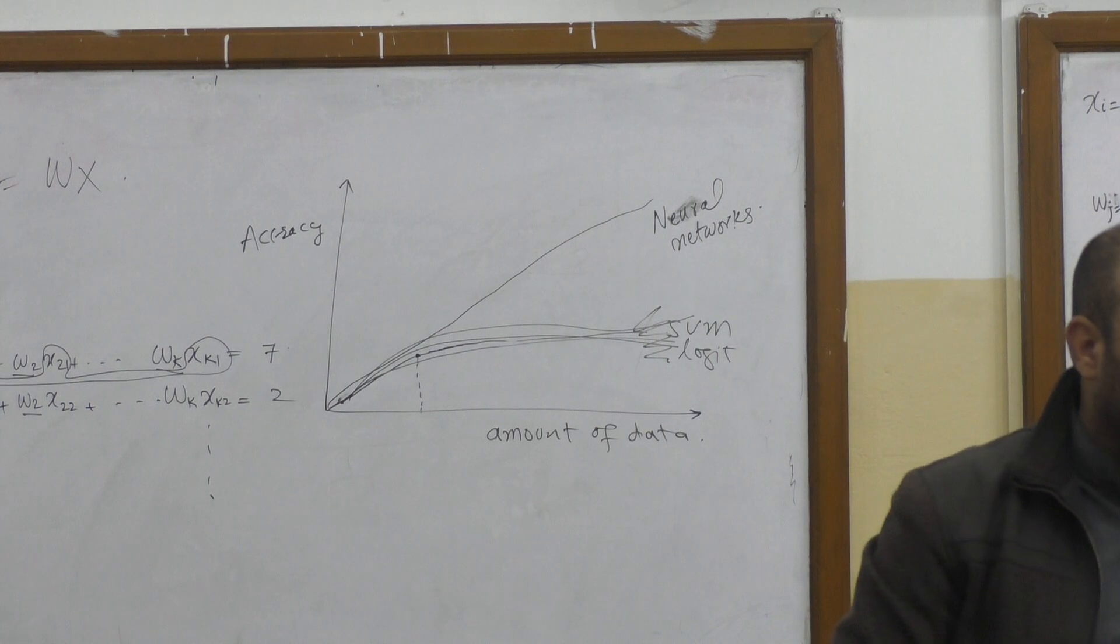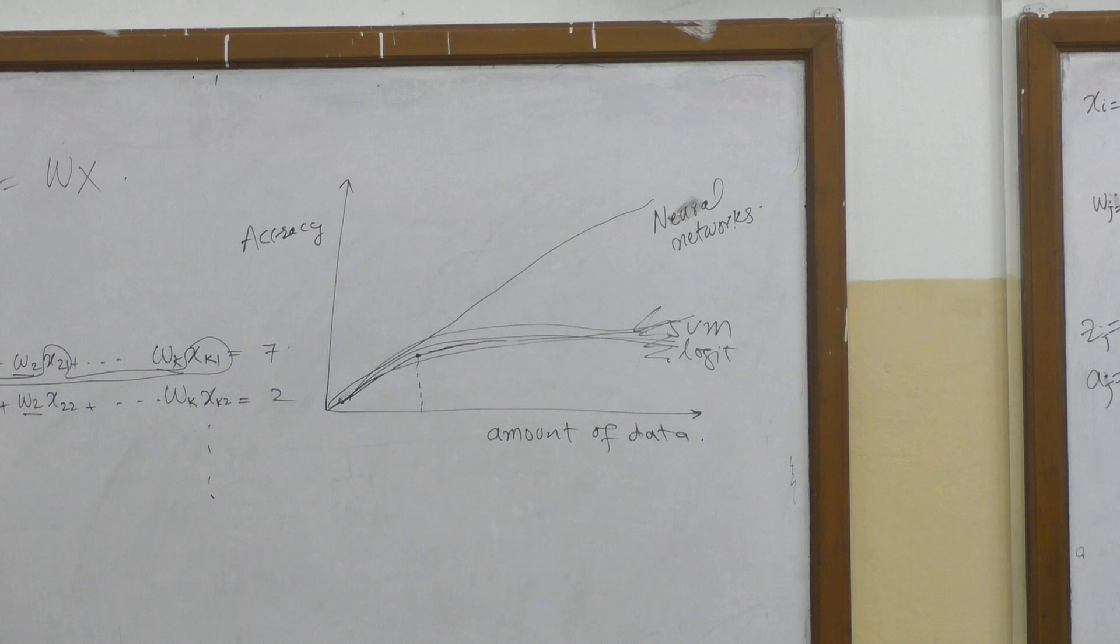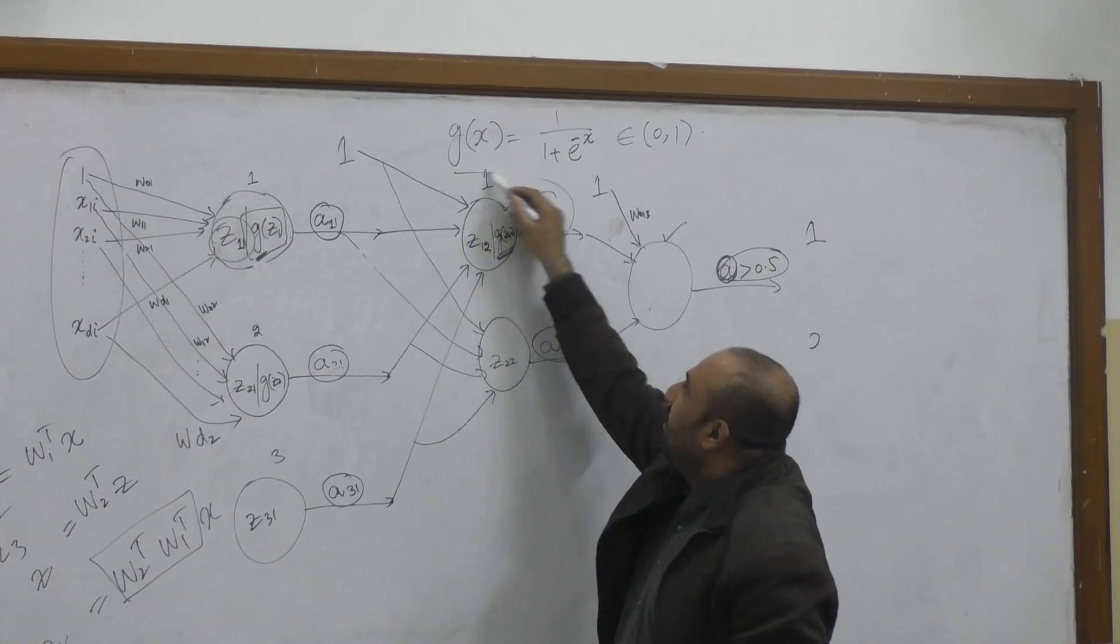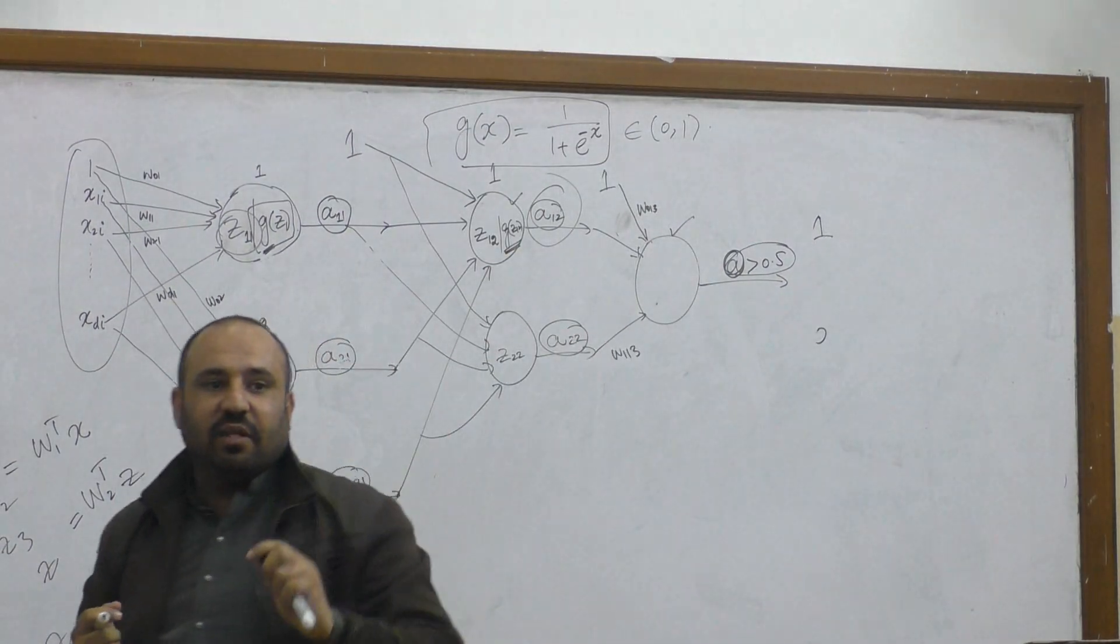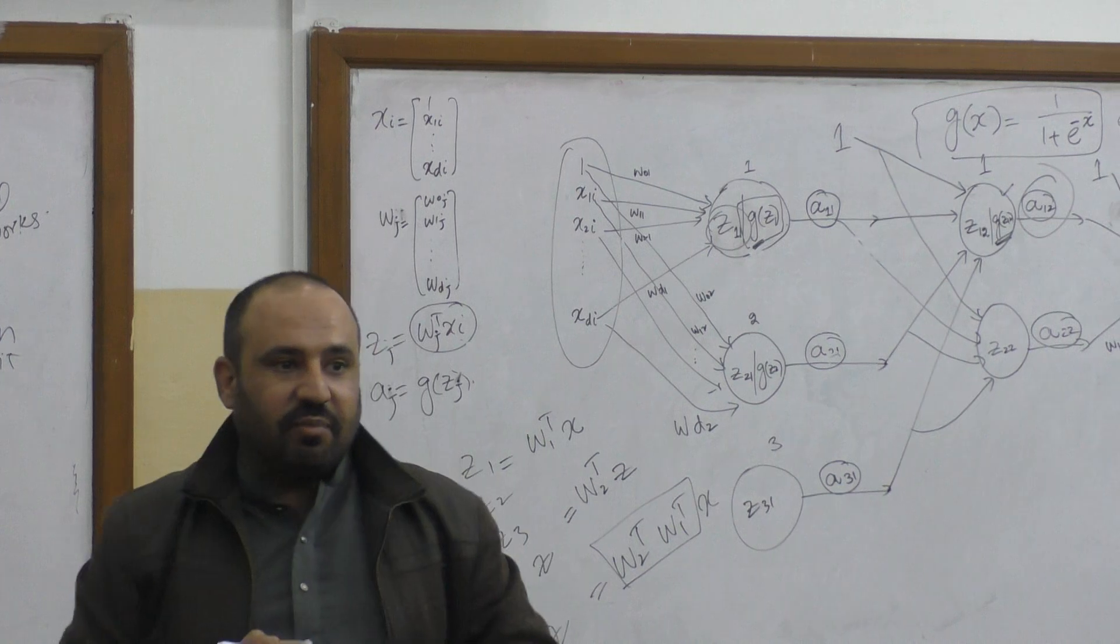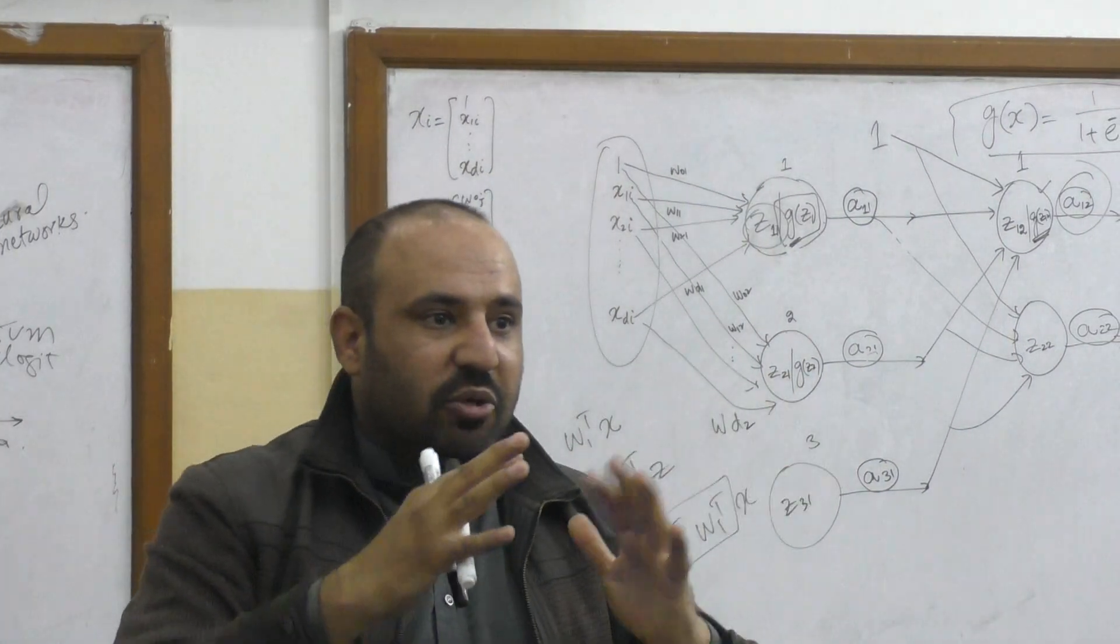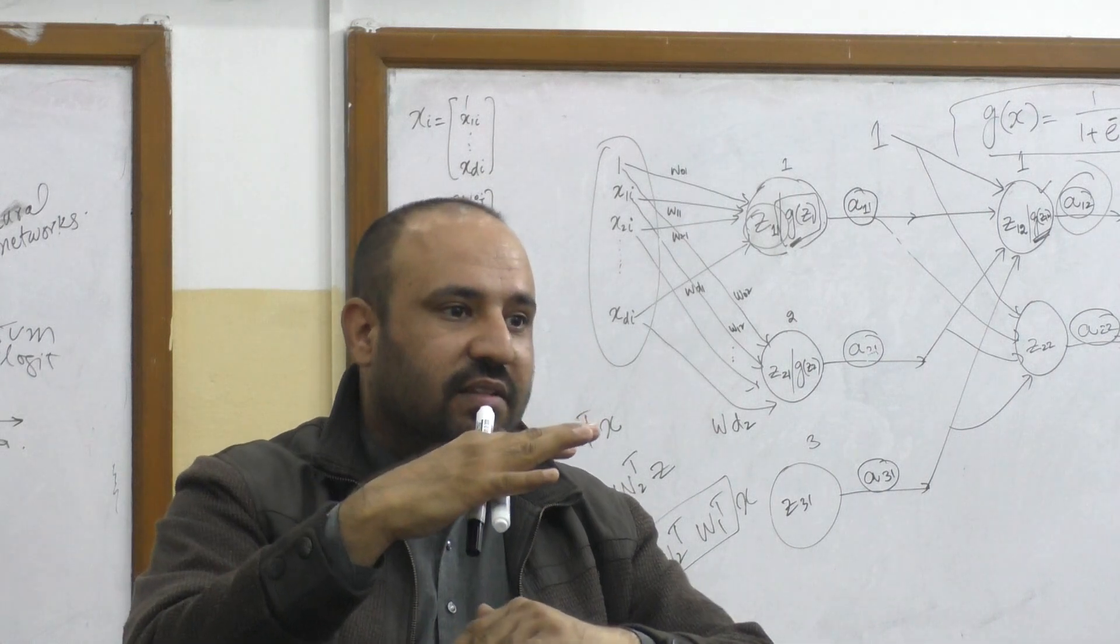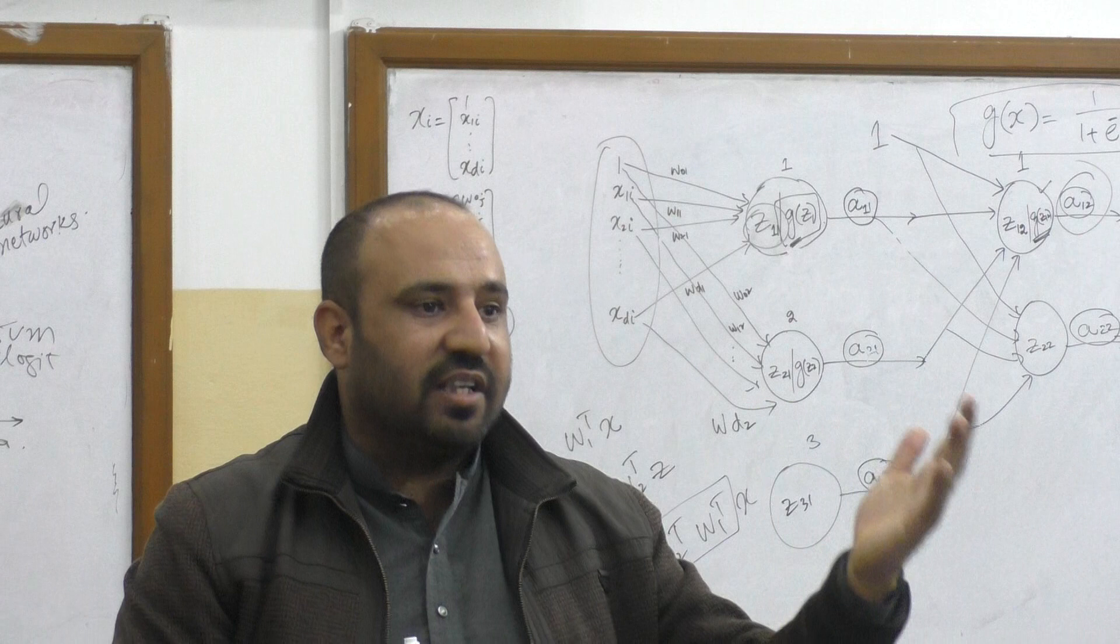How do we choose G? Based on recommendations. The general property of G is it should be differentiable. The other desirable property is it should limit the data in a range. There is a problem of exploding gradients and vanishing gradients. As you move on, the values either start becoming very, very large or very, very small.